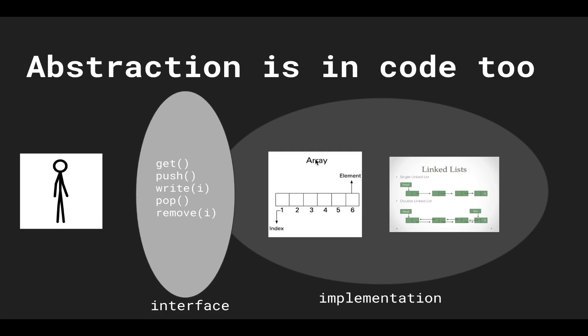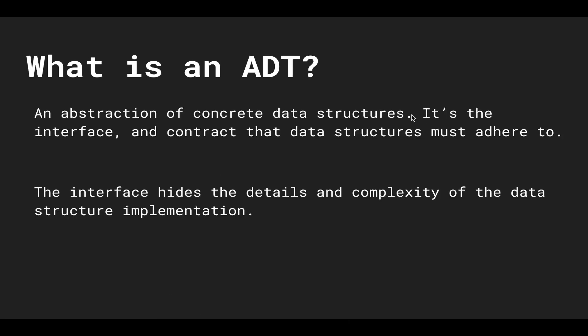I don't really care about the complexity of an array or linked list. All I care about is I want these four methods to be able to perform in a certain way and a specific speed. So abstraction is the interface and contract that data structures must adhere to and implement to. And the interface hides the details and complexity of the data structure implementation.